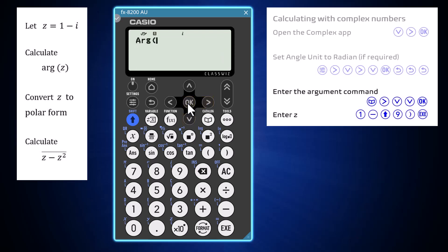To enter a complex number, use the numerical keys, and when i is required, enter it by pressing shift and the 9 key. To finalize the argument command, close the brackets and press execute.